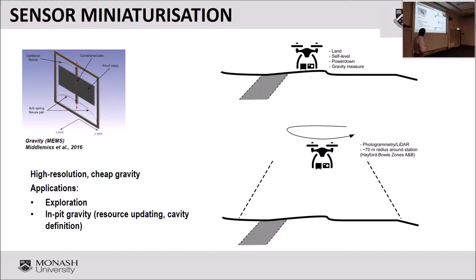The gravity instrument will most likely require the drone to land, power down, take measurements, and take off to the next spot. But a key advantage of putting a gravity meter on a drone is that the drone itself, equipped with a digital camera or LiDAR, can simultaneously survey the topography. Topography is a very important dataset for gravity corrections — needed to extract the actual gravity signal that tells you something about the Earth material beneath. So there's a distinct advantage to putting a gravity meter on a drone that you wouldn't get with traditional surveys.